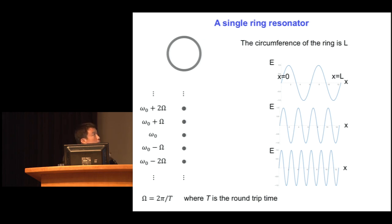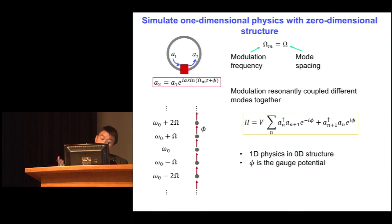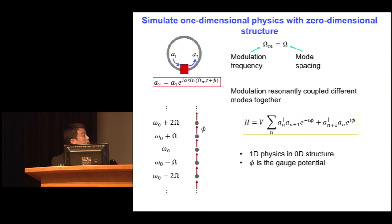If this is a stationary ring that doesn't vary as a function of time, it's not terribly interesting — all these frequencies just do not mix and don't couple to each other. But we already showed you how you mix them: just by putting a modulator in the ring. You choose the modulation frequency to be equal to the frequency spacing between all these modes, and in doing so, you couple all these modes together. The ring therefore forms what's called a one-dimensional tight-binding model — essentially, the photon hops along the frequency axis. So you get a synthetic one dimension out of the zero-dimensional world. The modulation phase here shows up as a hopping phase along the frequency axis.